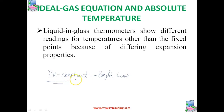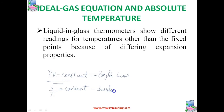Boyle's Law is named after Robert Boyle, the English chemist who discovered it. When pressure is held constant, the volume of a quantity of gas is related to temperature such that V/T = constant. This relationship is known as Charles' Law, named after the French scientist Jacques Charles.